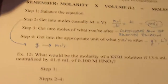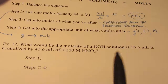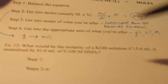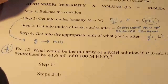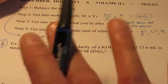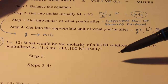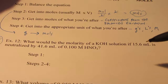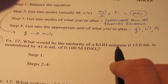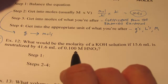This is going to sound a lot like Charlie Brown's teacher as I read this question. I'm going to put a big star by this because this calculation is one we're going to do in our lab next week, so you have to understand it. Here we go: What would be the molarity of a potassium hydroxide solution if 15.6 mL is neutralized by 41.6 mL of 0.1 molar nitric acid?